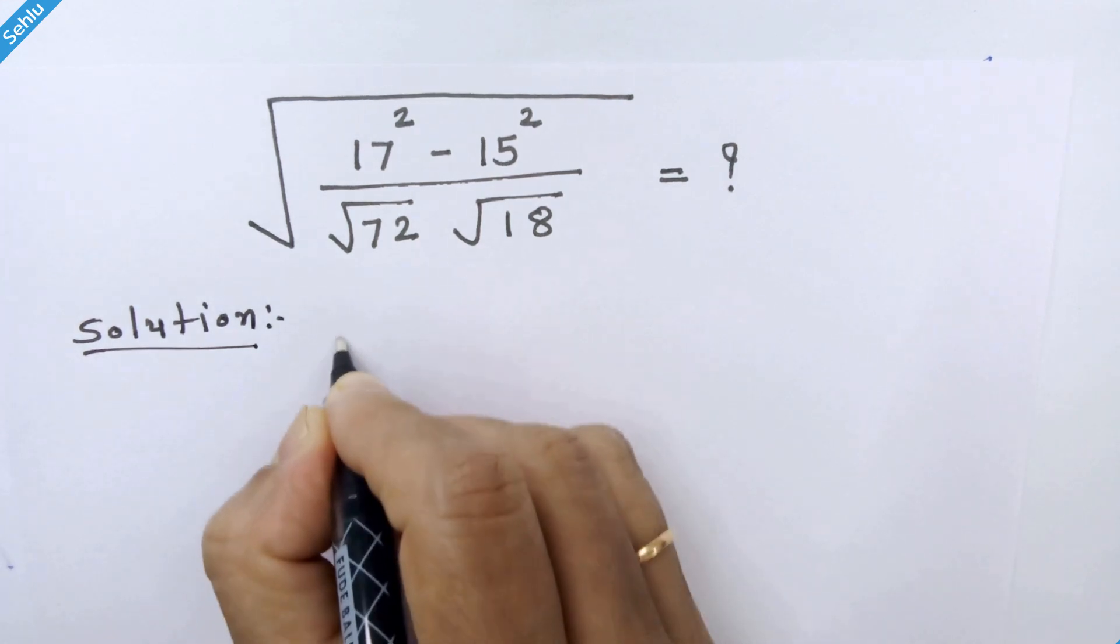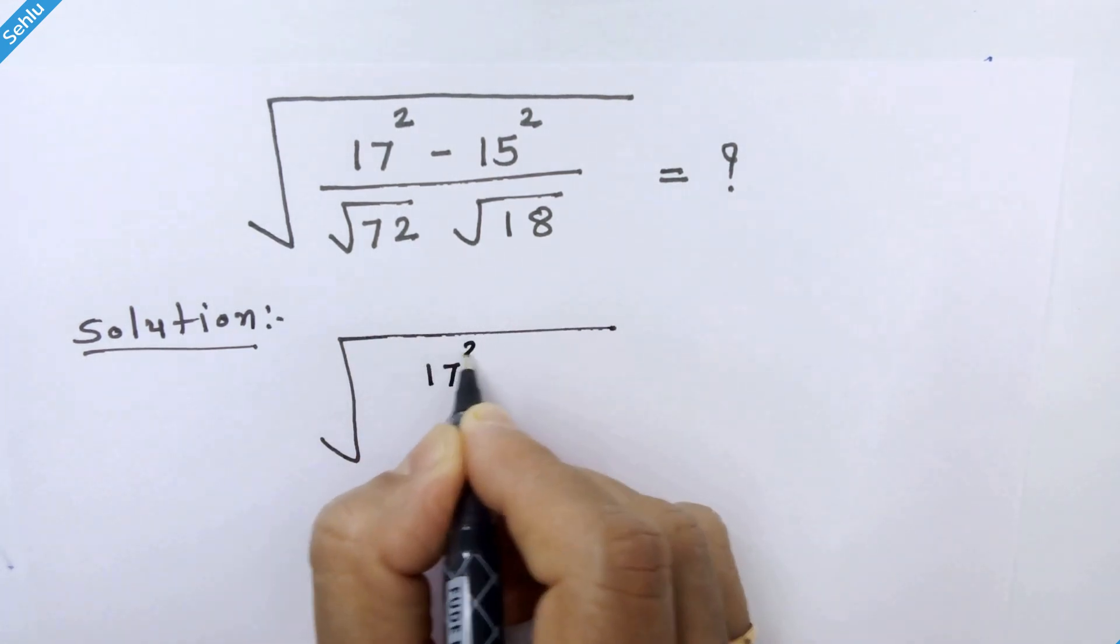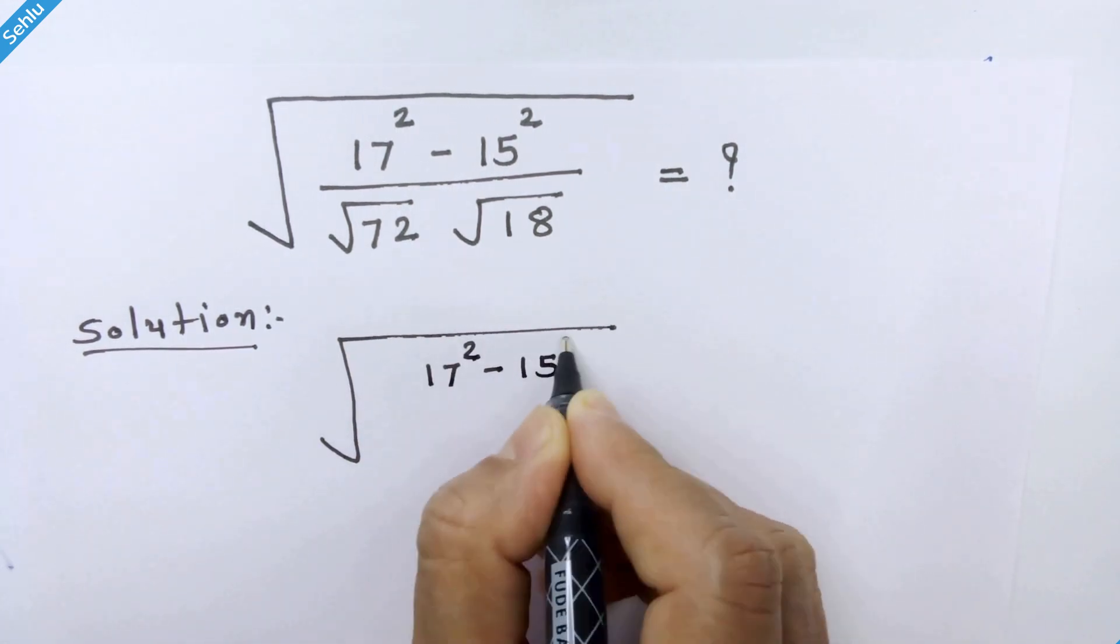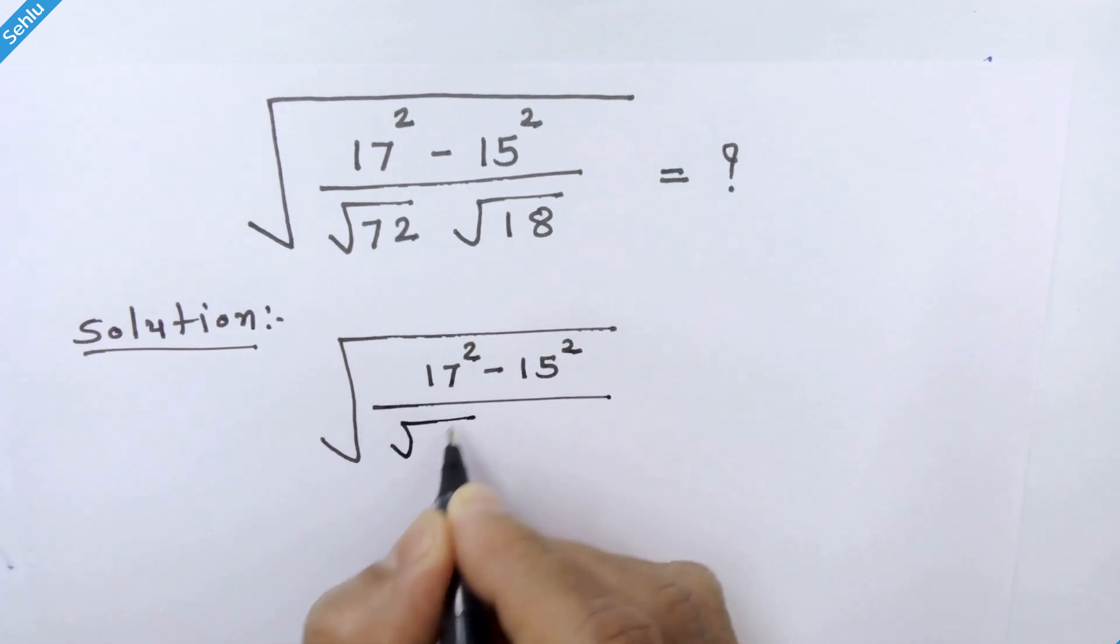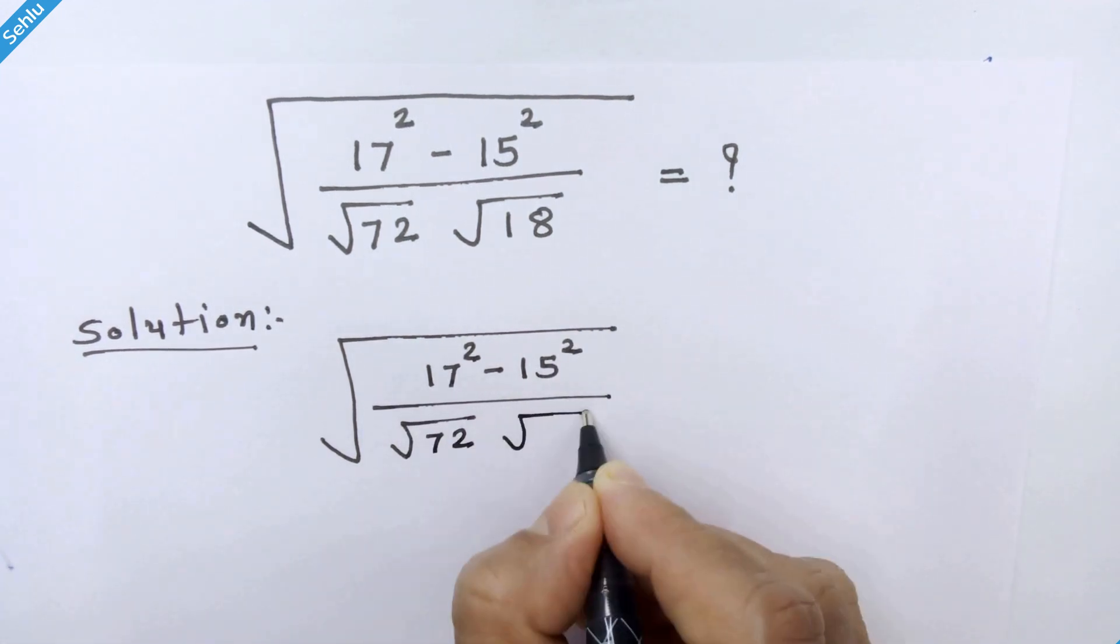So our question is square root of 17 squared minus 15 squared over square root of 72 times square root of 18.